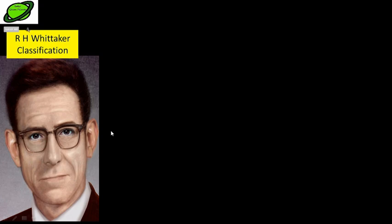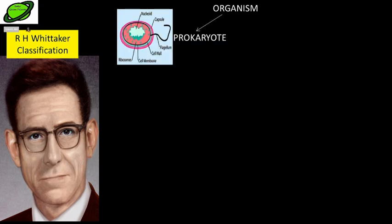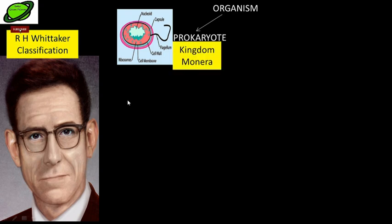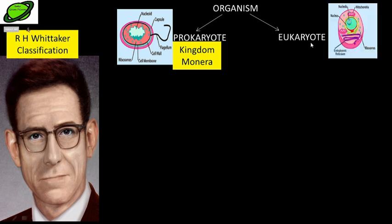R.H. Whittaker gave a wonderful classification considered the best till now. In this classification, organisms were divided into two groups: first, prokaryotes — those which do not have a well-developed nucleus, meaning the nucleus lacks a nuclear membrane — placed in Kingdom Monera; and second, eukaryotes — those which have a well-developed nucleus with a nuclear membrane.